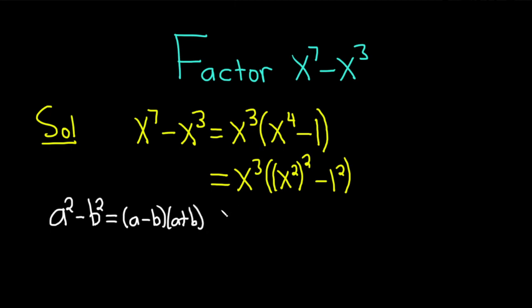So now we can use this formula. So continuing, we have x cubed. So our a is x squared, because it's a squared. So it's parenthesis x squared. And then our b is 1. So minus 1 times x squared plus 1.